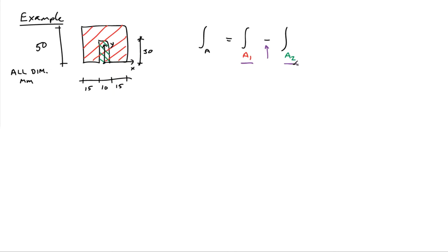I'm going to build my table. Notice that the way I've set up my coordinate axes, I have a vertical line of symmetry at x equals 0. So I already have the result that xc is equal to 0 — I don't have to calculate the x value of the centroid because of the way I've placed my coordinate system.